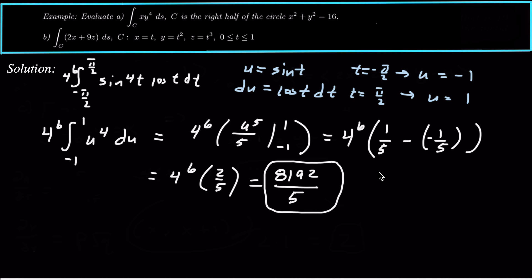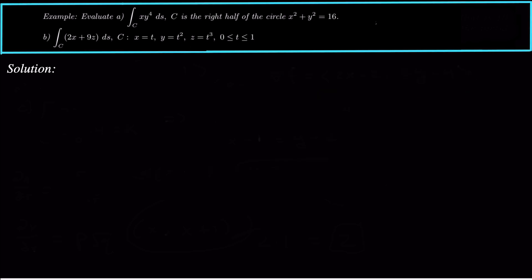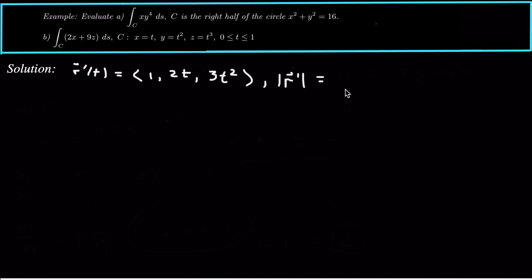The second problem is another scalar line integral, but with three dimensions — x, y, and z in terms of t for the curve C. The formula is still the same. We need to find r'(t). Differentiating x with respect to t gives 1, differentiating y gives 2t, and differentiating z gives 3t squared. Then taking the magnitude of r': the square root of 1 plus 4t squared plus 9t to the 4th.